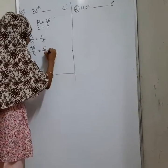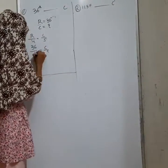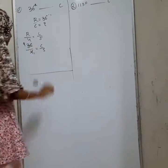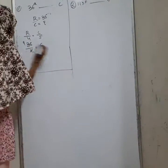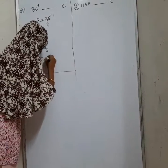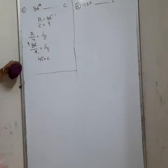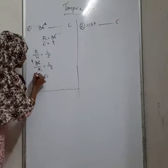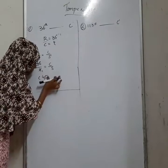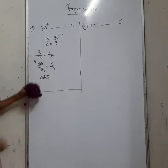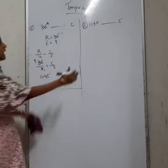So substituting, 36 by 4 is equal to 9, and C by 5. Solving, 9 into 5 equals 45, so C is equal to 45 degrees Celsius.